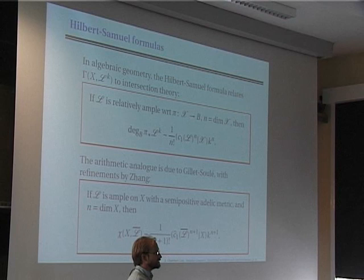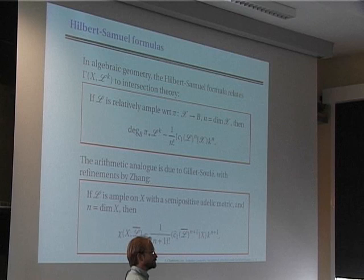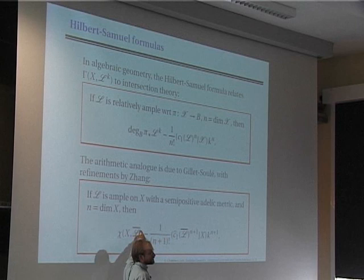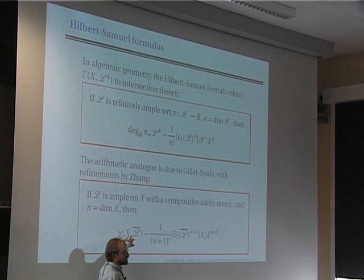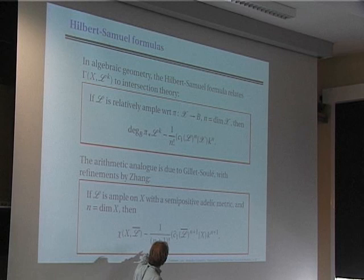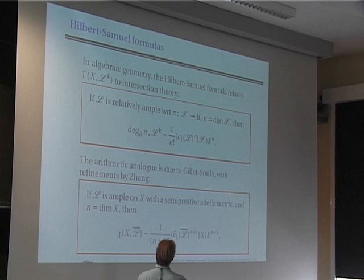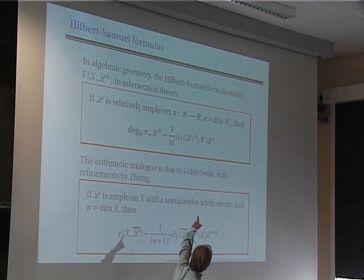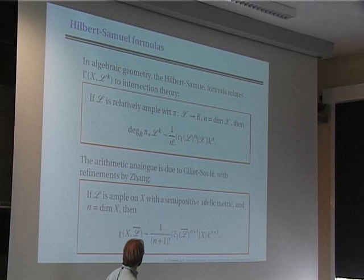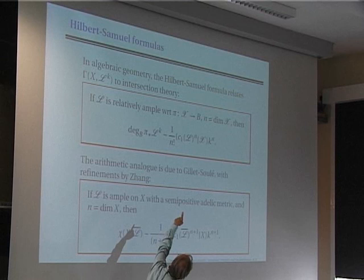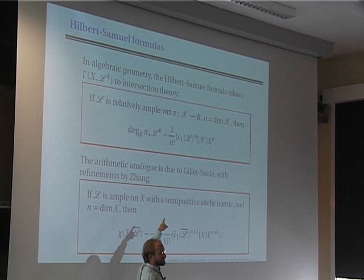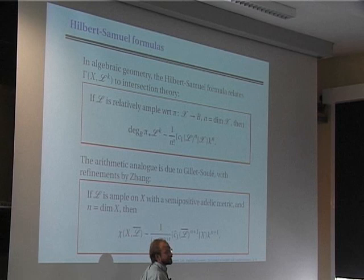In arithmetic geometry there is a similar statement due to Gillet–Soulé, but the version on the slide is due to Zhang because I have no regularity assumptions. It says that chi(X, L̄^k) has an asymptotic expansion whose leading term is (1/(N+1)!) times ĉ₁(L̄)^(N+1) · X times k^(N+1). This number is precisely the height of the variety X, just as the degree of the variety curly X appeared above. The dimension has been shifted from N to N+1 because in the geometric setting curly X was of dimension N, so the generic fiber is dimension N−1, whereas here X is the generic fiber of some non-existing fibration over a projective arithmetic base.